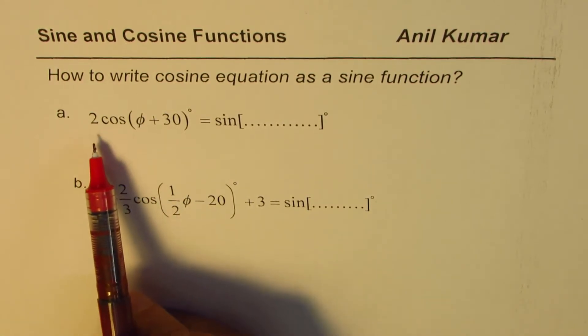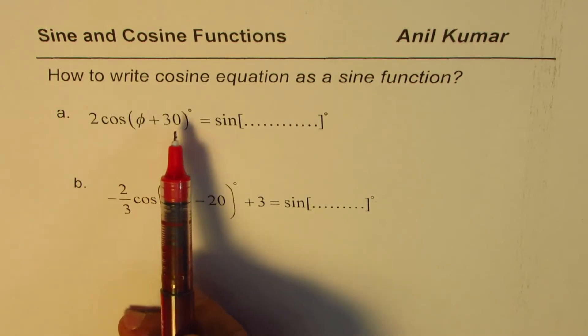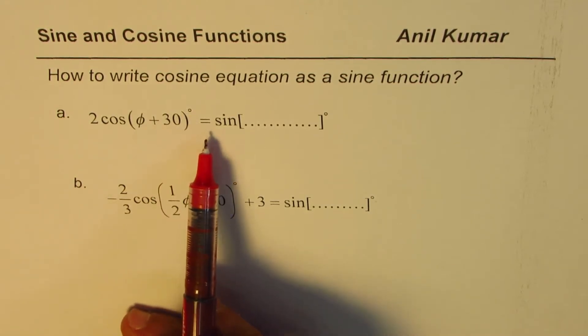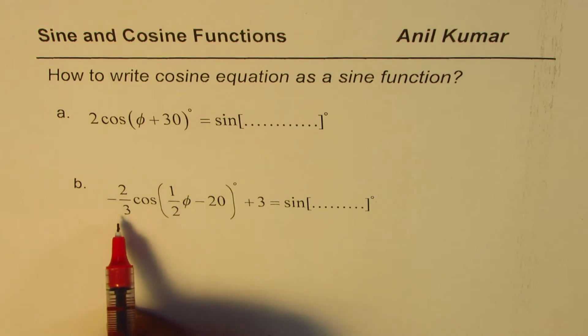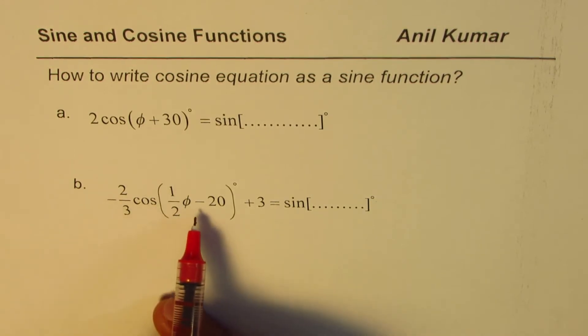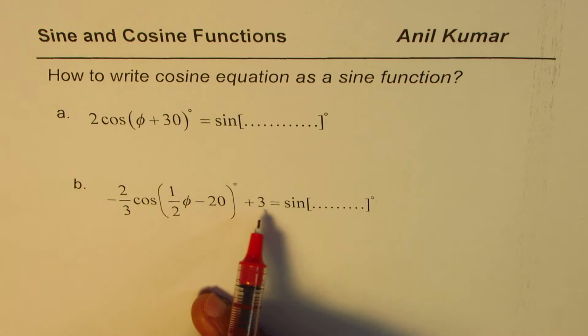We have 2 cos(φ + 30°). We need to write this as a sine function. The other one is -2/3 cos(1/2 φ - 20°) + 3 equals sine of what?